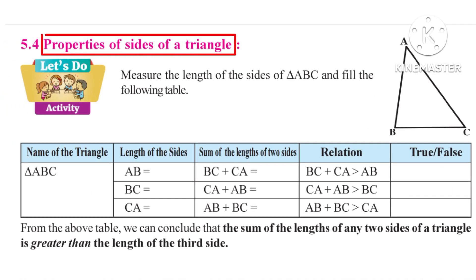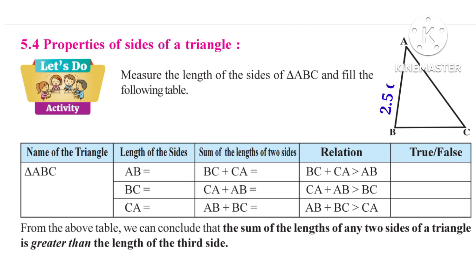Measure the length of the sides of triangle ABC using a scale and fill the following table. We found that using scale the length of AB is 2.5 cm, the length of BC is 2 cm, and the length of AC is 3 cm. Now write the same in the table.